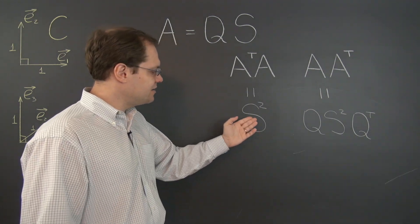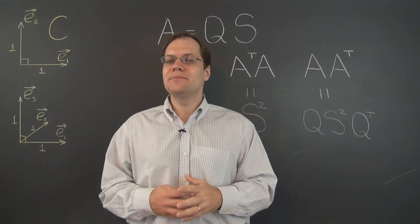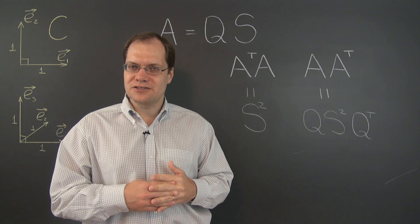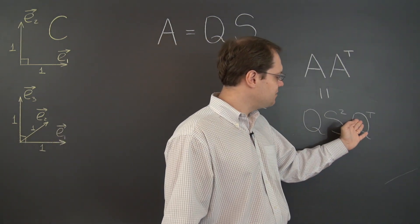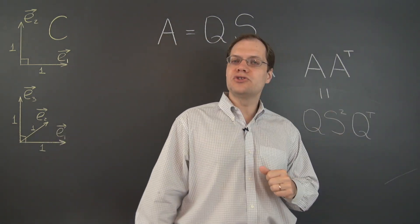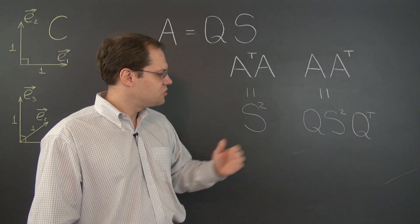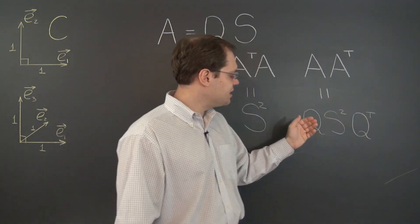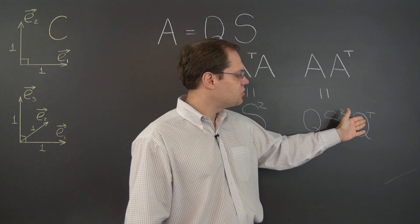Well we can see it right here. These two matrices are related by a similarity transformation. Because Q is an orthogonal matrix, Q transpose also equals Q inverse. So this matrix on the right can read Q S squared Q inverse.